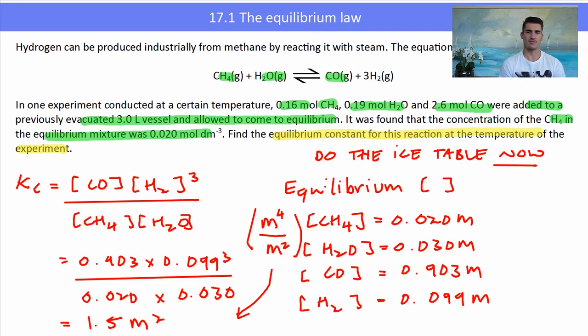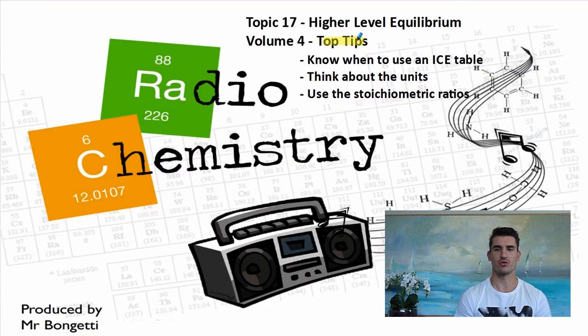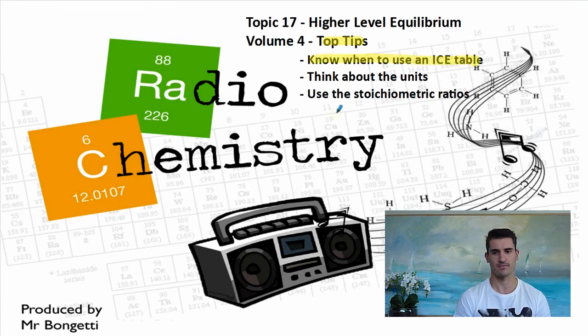So volume four, some top tips: Make sure you know when to use an ICE table. It's that initial and equilibrium that gives it away. Think about the units and make sure you look at the stoichiometric ratios. Thanks for watching, guys. Don't forget to drop a like on the video, subscribe if you're new, and I'll see you next time.